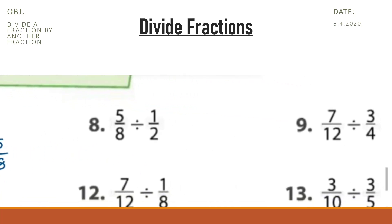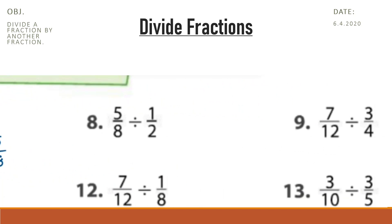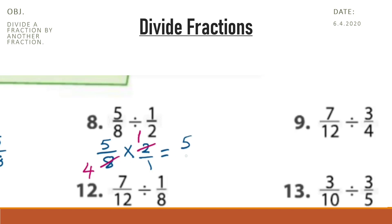In question number 8, the dividend is 5 eighths. Change the division to multiplication and the reciprocal of 1 half is 2 over 1. We can simplify: divide by 2, it will be 4; divide by 2, it will be 1. Now multiply: 5 multiplied by 1 is 5 and 4 multiplied by 1 is 4.